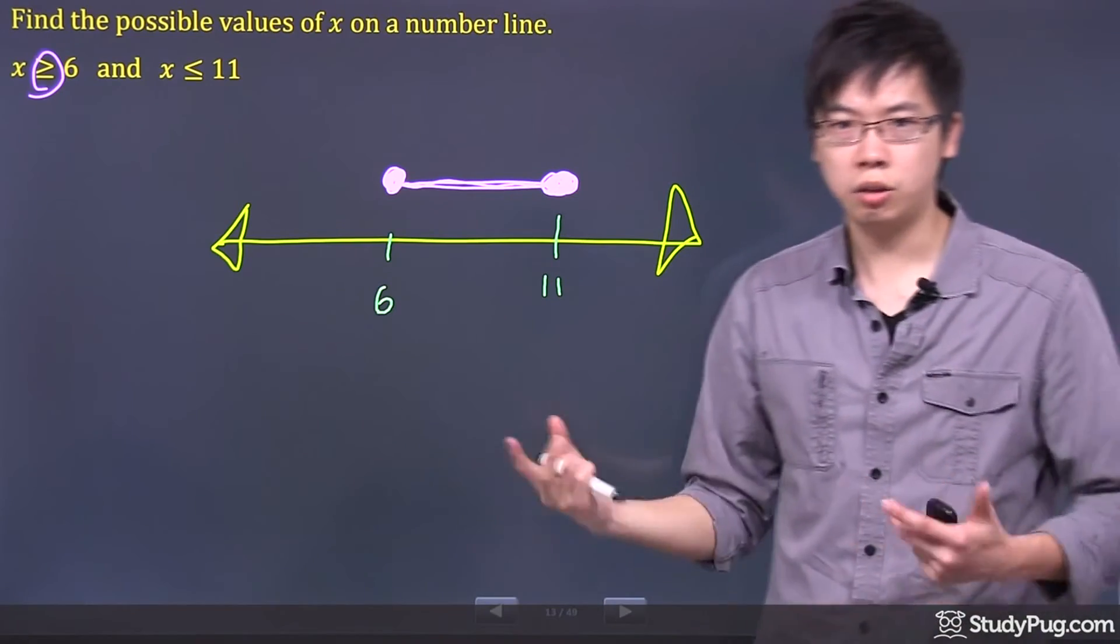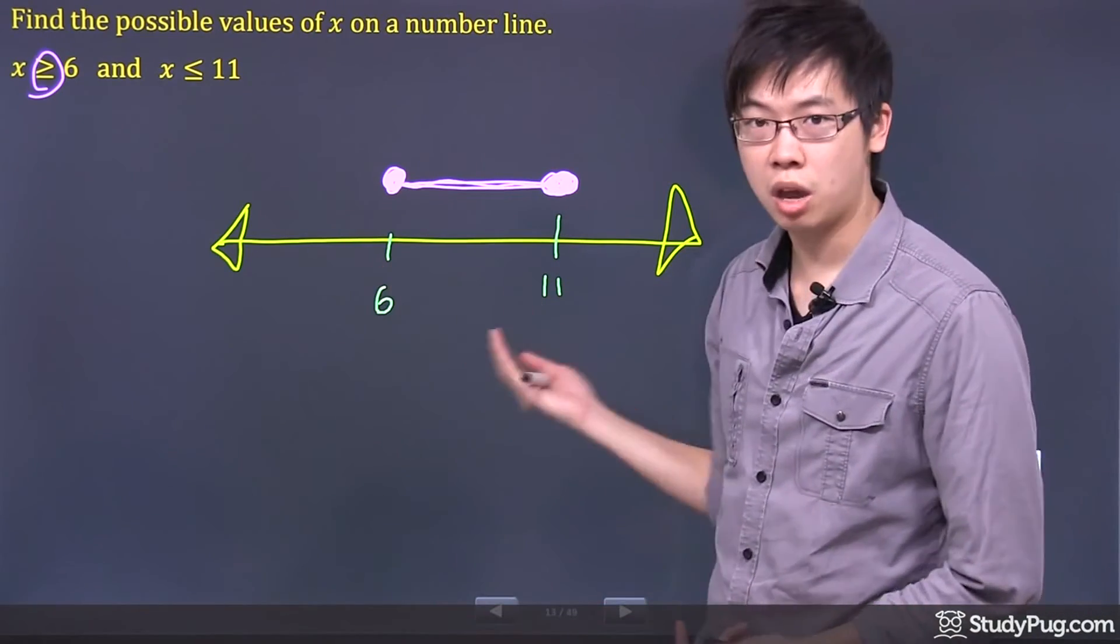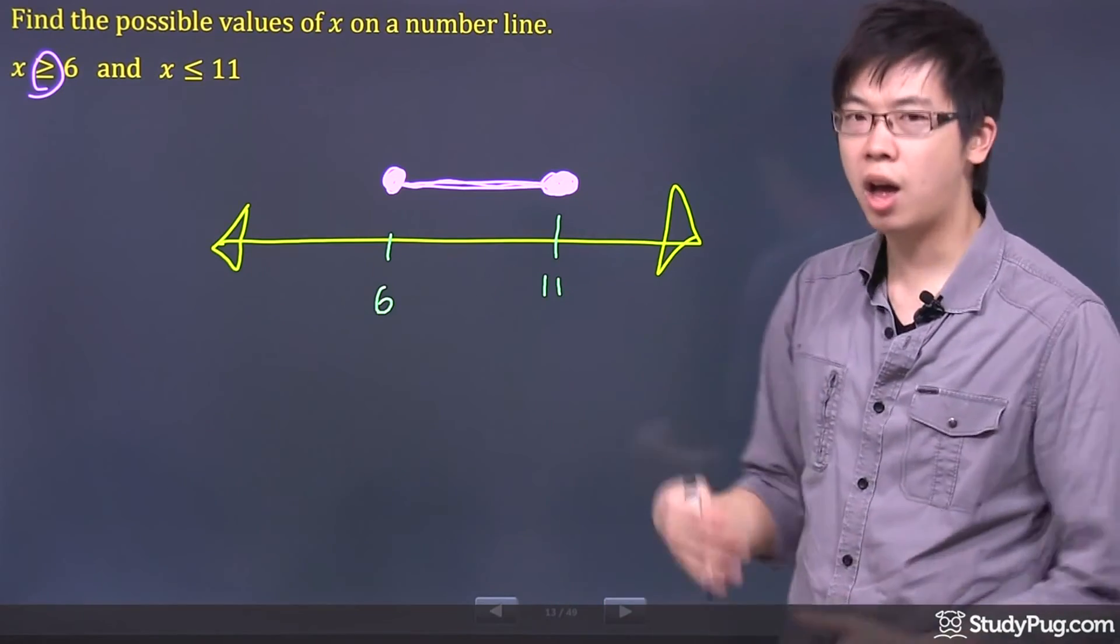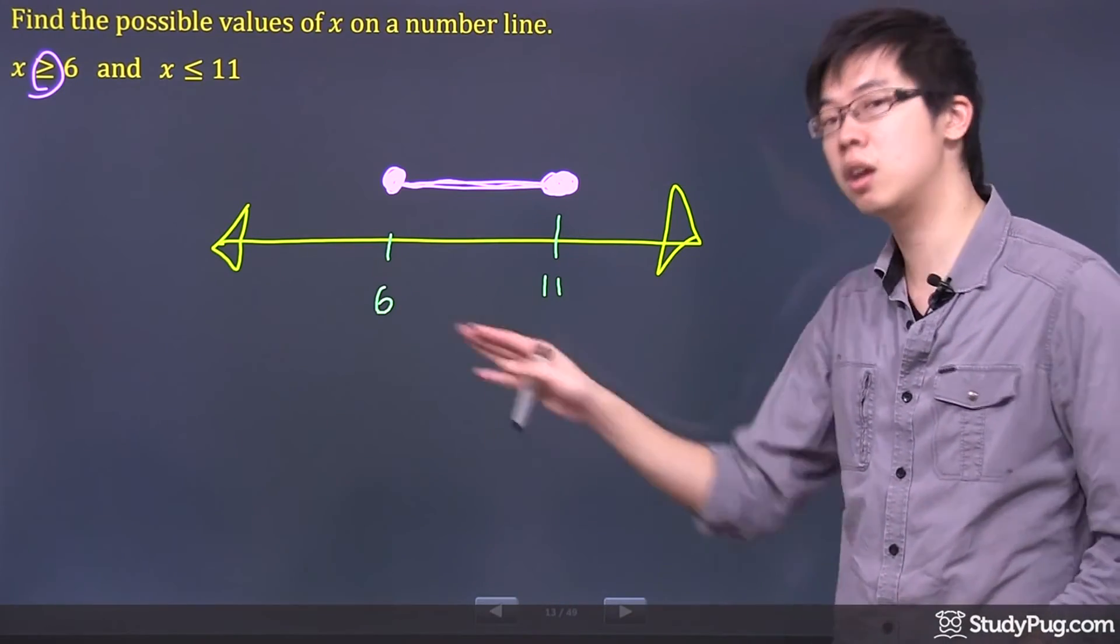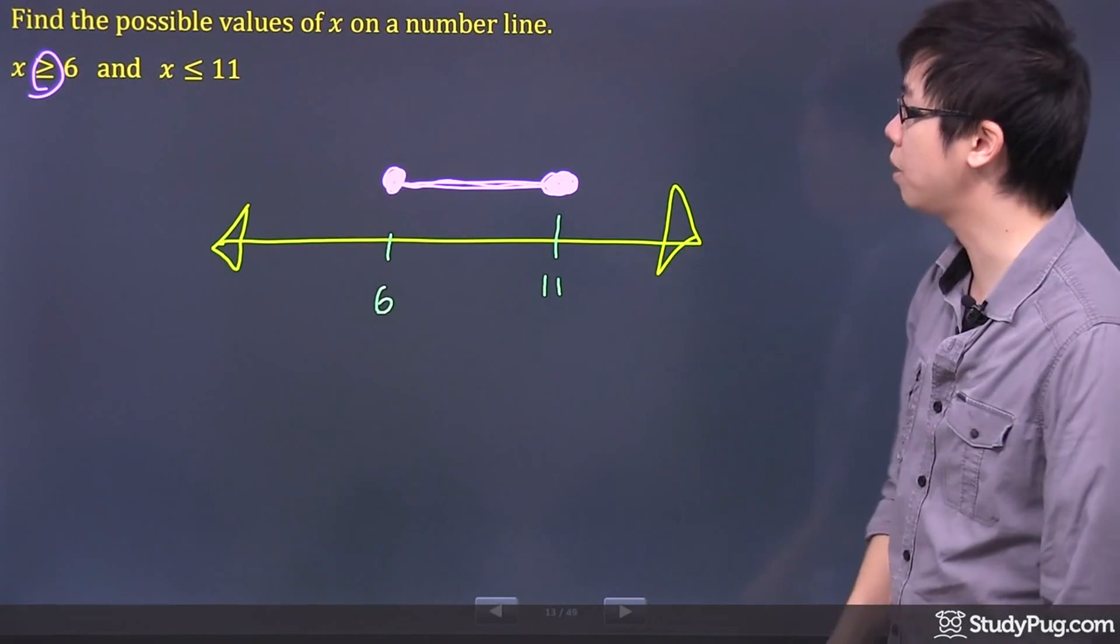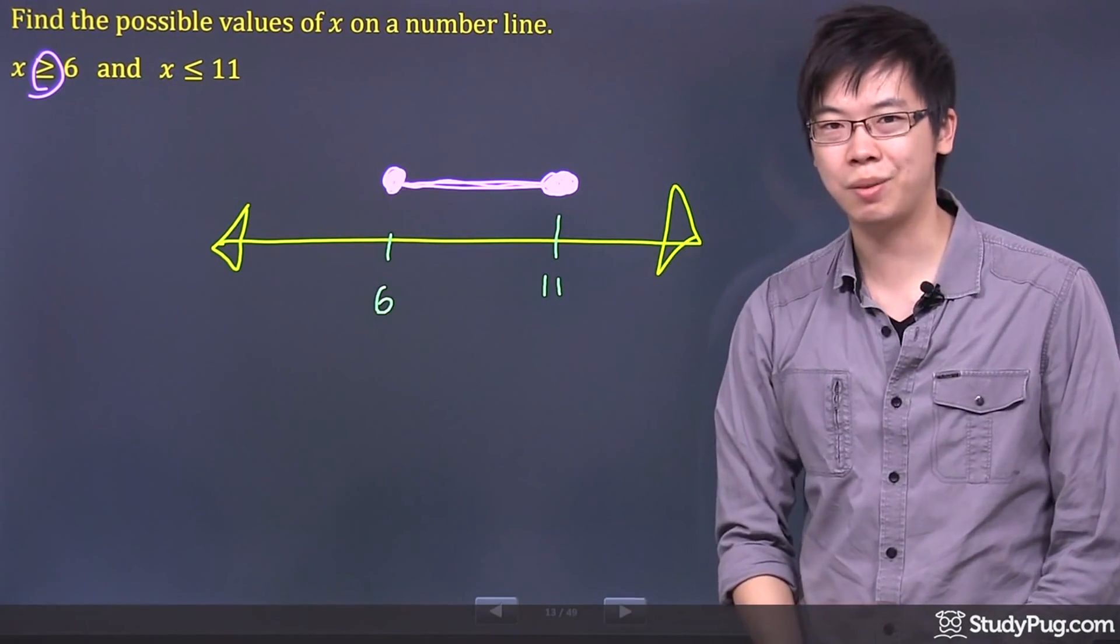And that will represent all the possible numbers between the 6 and 11, which includes like, you know, 7, 8, 9, 10, and 10.5, any numbers between the 6 and 11, inclusively. So that means it's also including the 6, also includes the 11. And that's it for this question. Thanks so much.